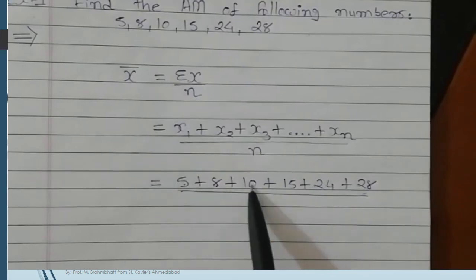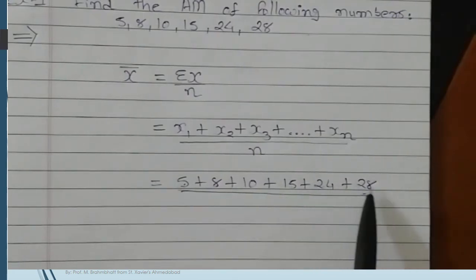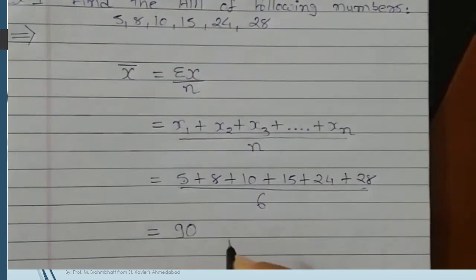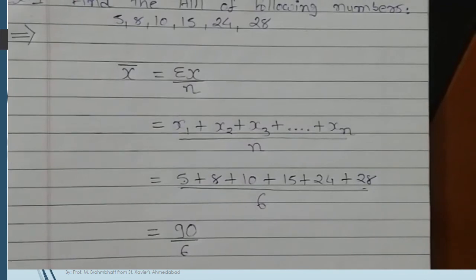1, 2, 3, 4, 5, and 6. So divide by 6. The total of x values are 90 divided by 6 equals 15.